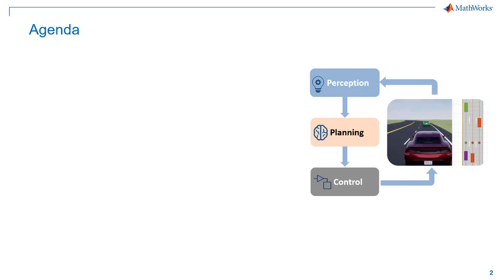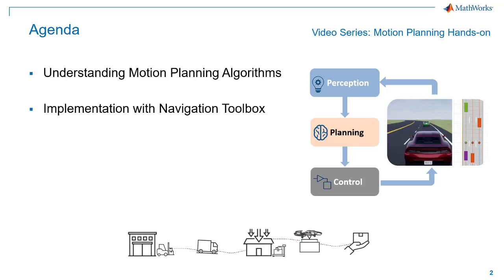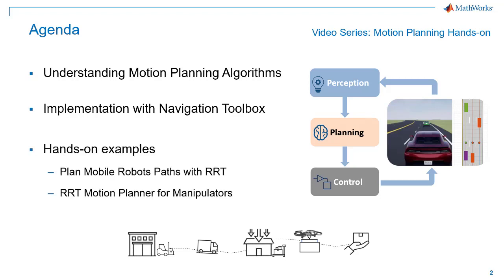For any type of autonomous robot, motion planning adds the essential piece in the autonomy. It helps to find a sequence of valid configurations that moves the robot from a source location to destination. In this session, we will learn about path and motion planning algorithms and how you can use MATLAB and Navigation Toolbox to quickly implement these algorithms and find a shortest obstacle-free path for your robot. We will see two application examples: I will cover path planning for mobile robots, and YJ will cover how to do the same for a robot manipulator.